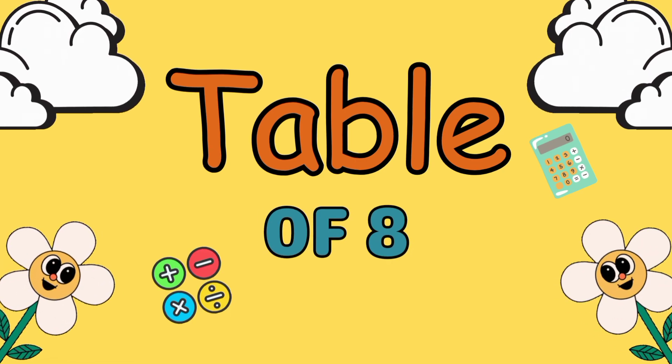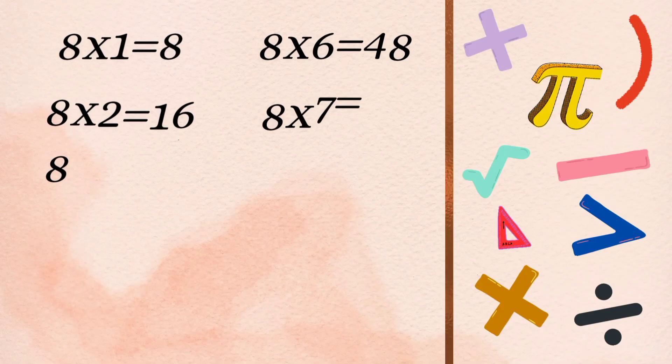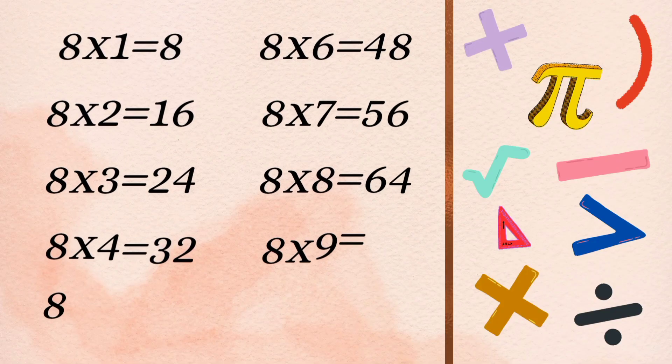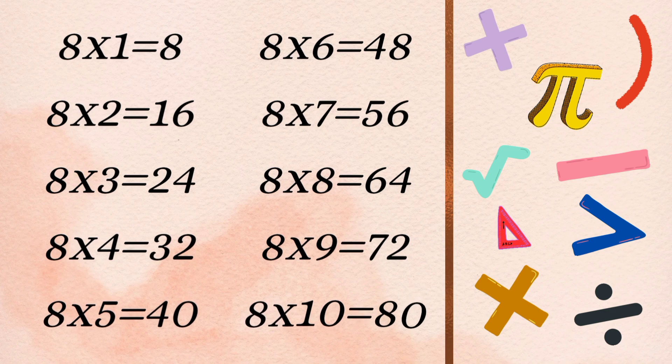Table of 8: 8 1s are 8, 8 2s are 16, 8 3s are 24, 8 4s are 32, 8 5s are 40, 8 6s are 48, 8 7s are 56, 8 8s are 64, 8 9s are 72, 8 10s are 80.